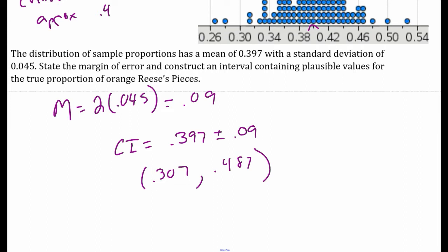This interval from 0.307 to 0.487 — from 30.7% to 48.7% — is our 95% confidence interval that contains the plausible values for the true proportion. We are 95% confident that the true proportion of orange Reese's Pieces is between 30.7% and 48.7%.